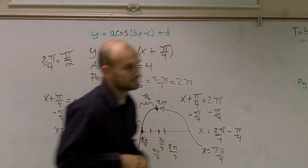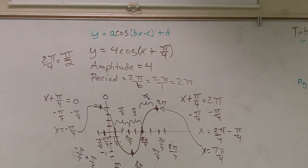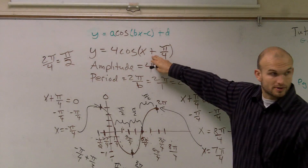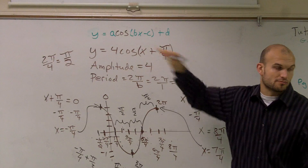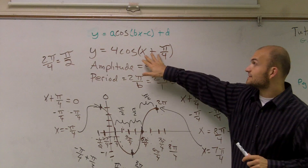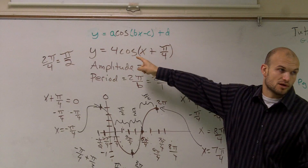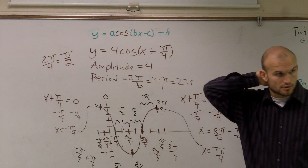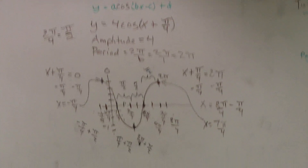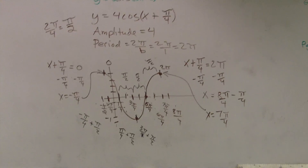Student question: Where does pi over four come from? It comes from the transformation — that's your horizontal shift. Whatever is inside the parentheses is what we use. Just make sure you include everything inside there, because you might have numbers in front of your x as well, so include all of that.